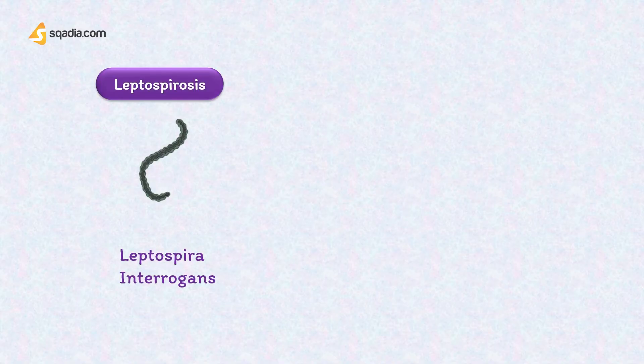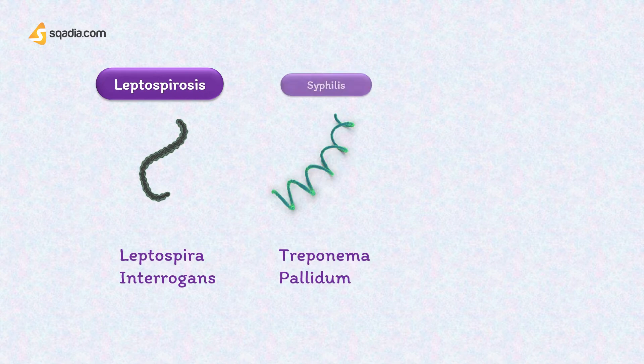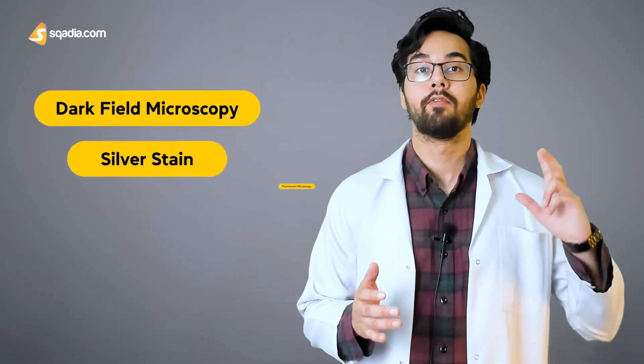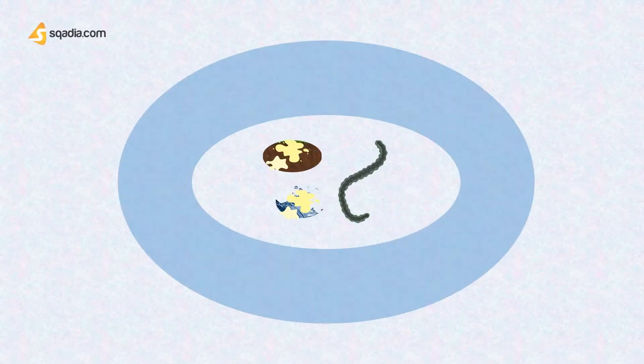Leptospirosis is caused by a spirochete bacterium known as Leptospira interrogans. The other two spirochetes are Treponema pallidum, which causes syphilis, and Borrelia burgdorferi, which causes Lyme disease. It is important to remember that Leptospira are spiral-shaped, highly motile, aerobic spirochetes with 18 or more coils per cell. They tend to stain poorly with common lab stains and are best visualized by dark field microscopy, silver stain, or fluorescent microscopy.